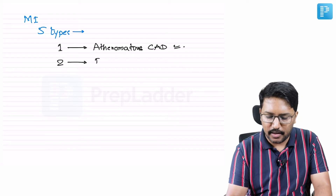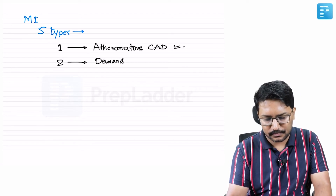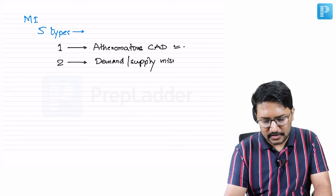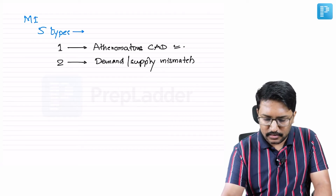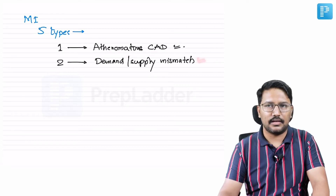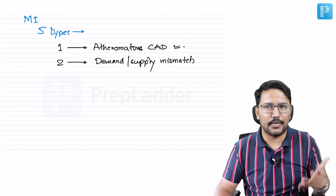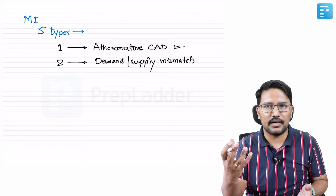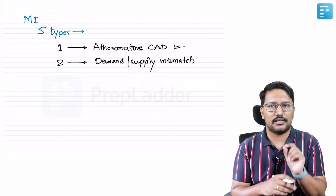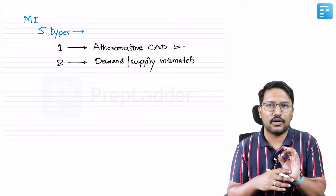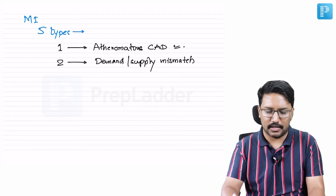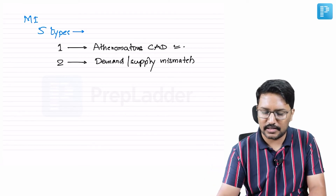In Type 2 myocardial infarction, there is a demand and supply mismatch without the primary abnormality being atheromatous coronary artery disease. In atheromatous CAD, there is also a demand-supply mismatch, but in Type 2, you don't have atheromatous CAD. The coronaries may be occluded because of an embolic phenomenon, or there may be increased myocardial demand.